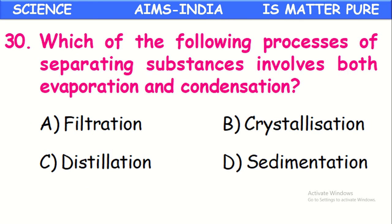Which process of separating substances involves both evaporation and condensation? The answer is distillation. In distillation, a liquid first evaporates at a fixed temperature and converts into gaseous form. Those vapors are then collected into another container by cooling, converting back into liquid — that is called condensation. So both evaporation and condensation occur in the distillation process.